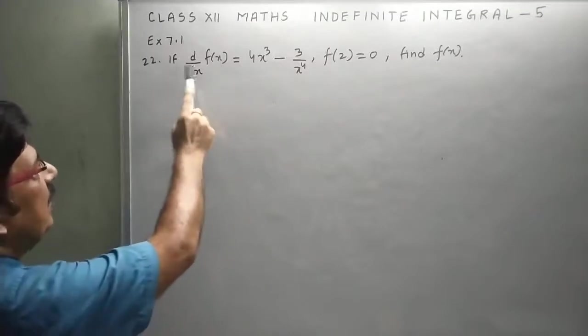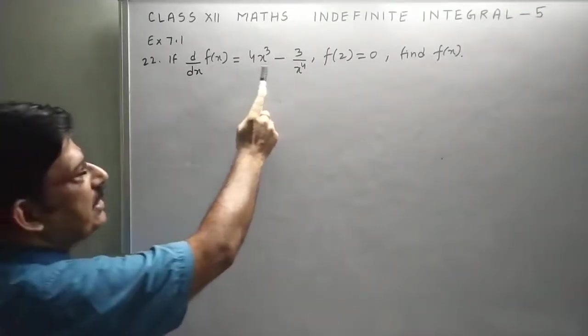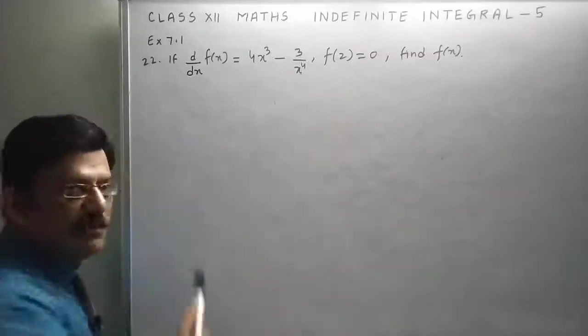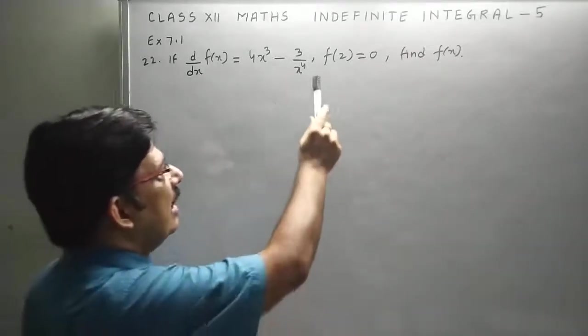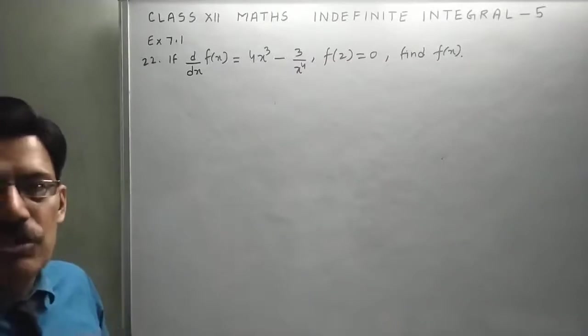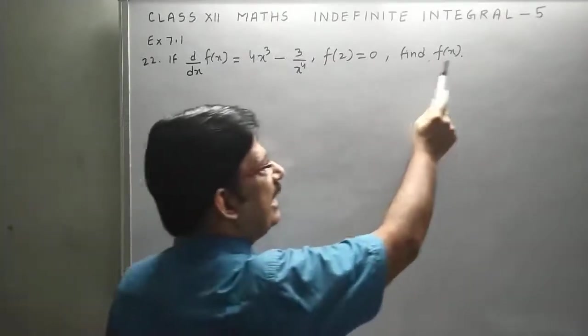Given, if derivative of f(x) is equal to 4x³ minus 3 upon x to the power 4 and a condition is also given that f(2) is equal to 0, then find f(x).